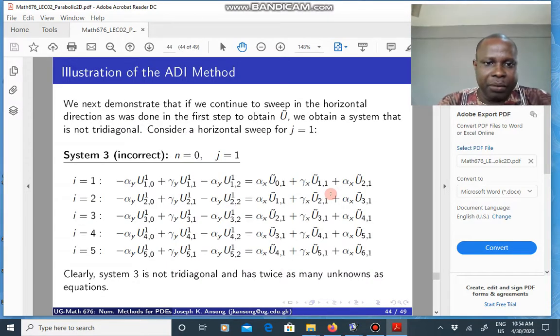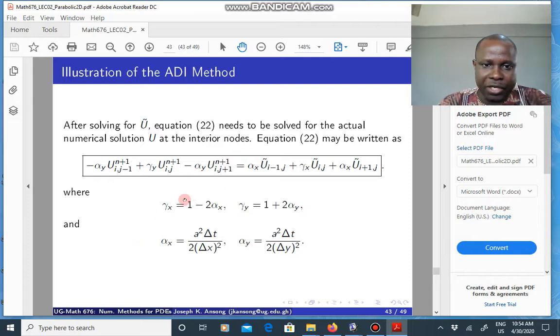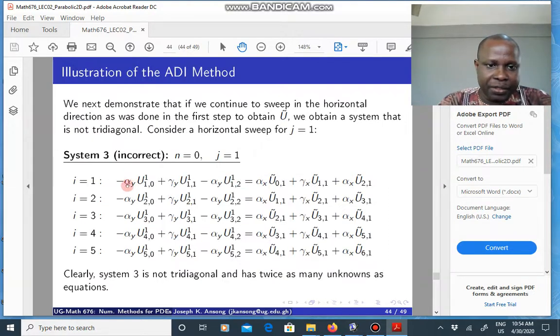Now I want to show that if you continue to sweep in the horizontal, for instance if you take j and just as we did for the first step, look for different values of i and plug them into this equation here, the resulting system you get will be this. The right hand side is known. That is fine.